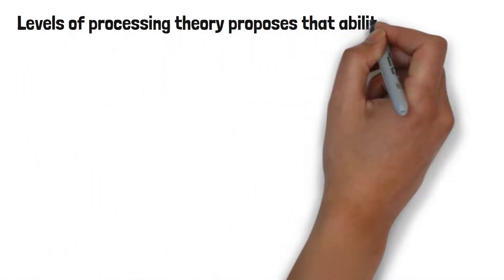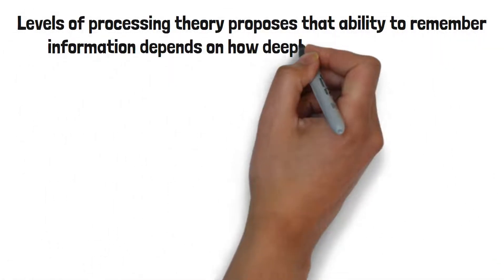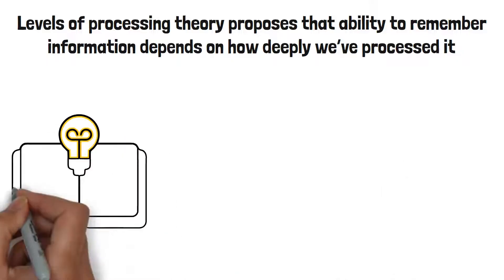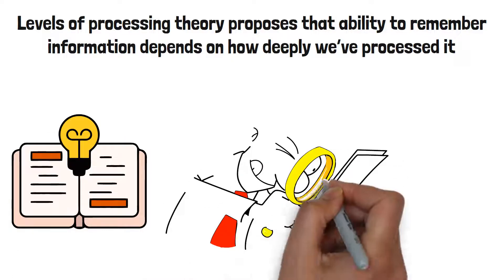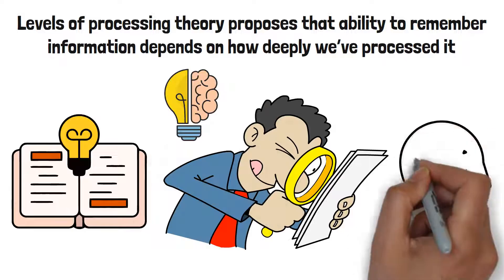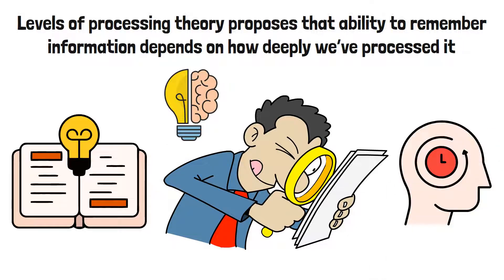Levels of processing theory proposes that ability to remember information depends on how deeply we've processed it. According to this theory, if we engage in deep analysis of a concept, we will remember it longer and more clearly than if we engage in shallow analysis.